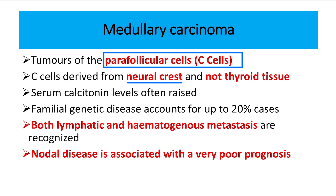Some other cells are also present — for example, in the adrenal medulla there are also cells of ectodermal origin. Different types of cells present in different parts of the body are of ectodermal origin but are found within the endoderm or mesoderm. So the C cell or parafollicular cell is actually a neural crest cell of ectodermal origin.